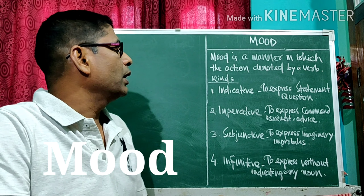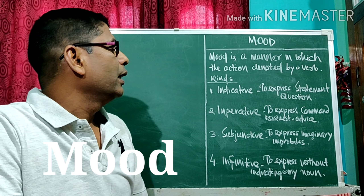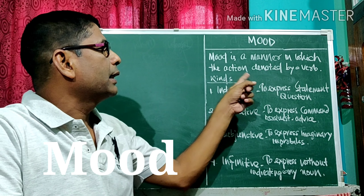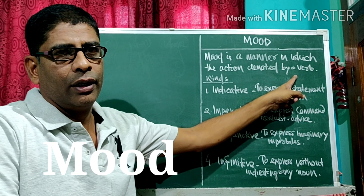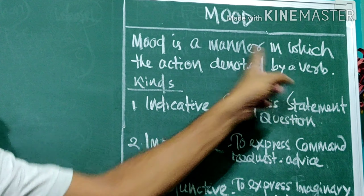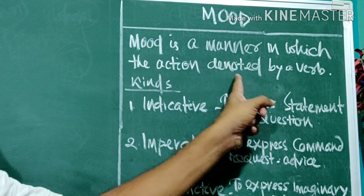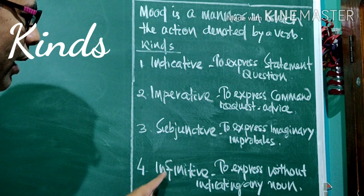Welcome to Rajesh English class. Today we will discuss about the mood — the mood of the verb. What is a mood? Mood is a manner in which the action is denoted by a verb.